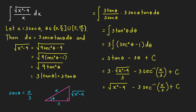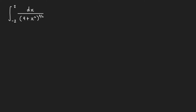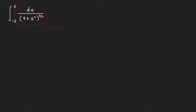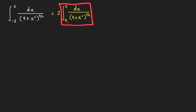Now let's move to our last integral: the definite integral from negative 2 to 2 of dx over the quantity 4 plus x squared raised to 3 halves. Note that the integrand 1 over this denominator is an even function, so its graph is symmetric about the y-axis. Therefore, this integral equals twice the value of the definite integral from 0 to 2 of dx over this expression.